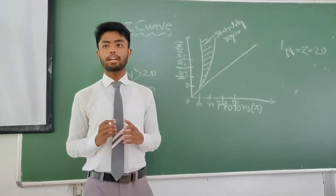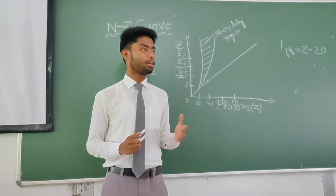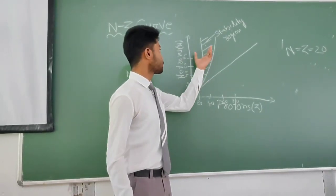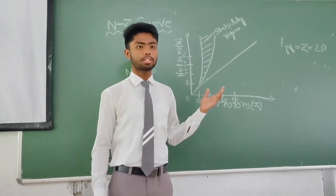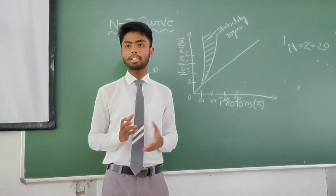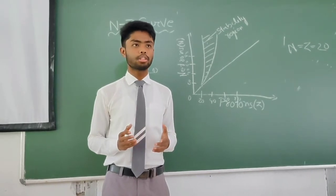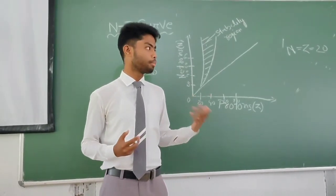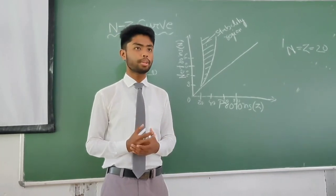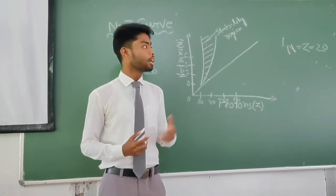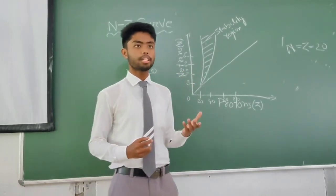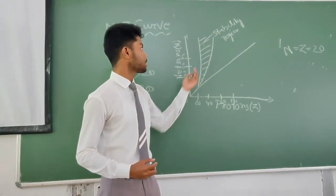But whenever the heavier stable nuclei fall, they fall in this shaded stability region. In conclusion, we can say there is an increasing number of protons in heavier stable nuclei, and they do not have the same number of protons and neutrons. With a greater number of protons, there is a Coulomb repulsive effect. To dominate this effect, we require more neutrons. For this reason, the heavier stable nuclei lie in this stability region.